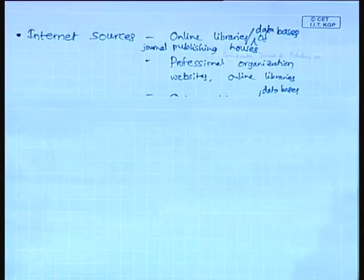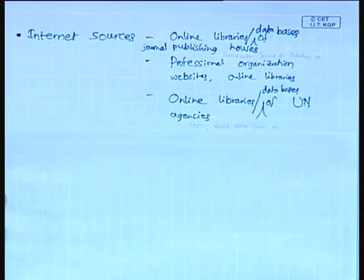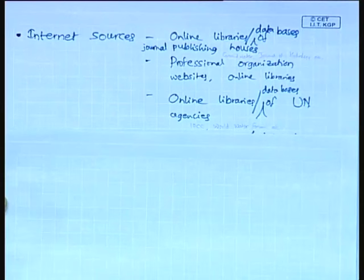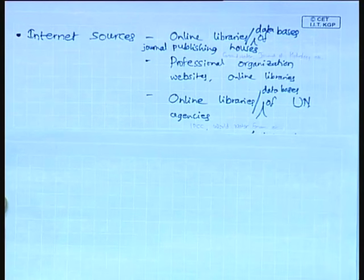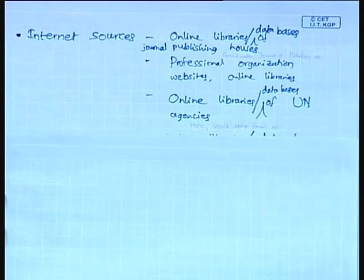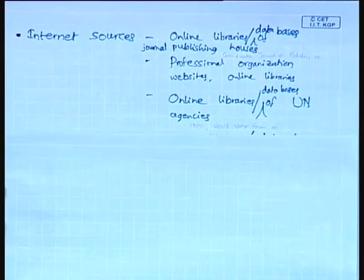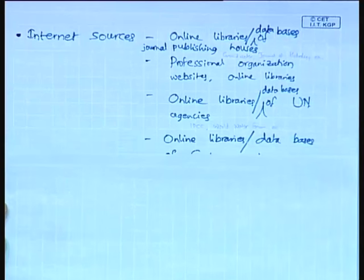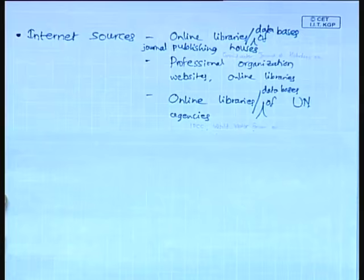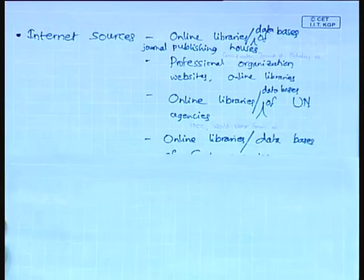These internet sources are very useful especially in places where we may not find the physical sources of ground water-related literature or data. The UN agencies have also maintained online libraries and databases — UN Water consisting of 28 UN bodies, the IPCC publications, the World Water Forum, and the Stockholm Water sector. These also constitute a vast amount of internet sources.